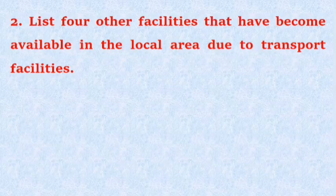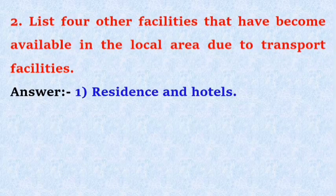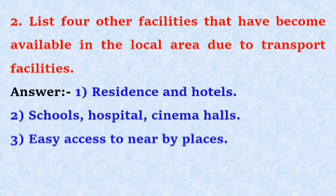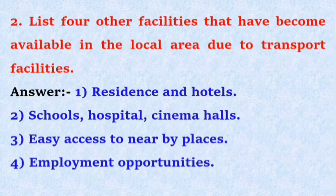Question no. 2: List 4 other facilities that have become available in the local area due to transport facilities. Answer: 1. Residences and hotels. 2. Schools, hospitals, cinema halls. 3. Easy access to nearby places for employment opportunities.